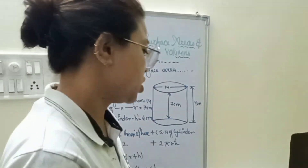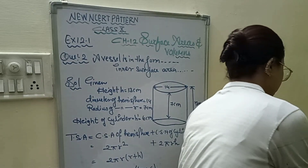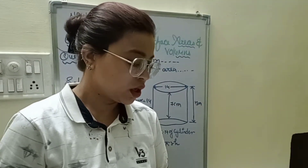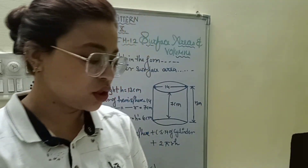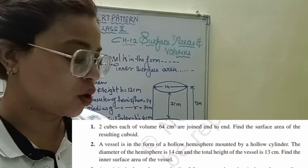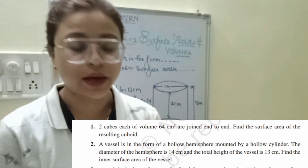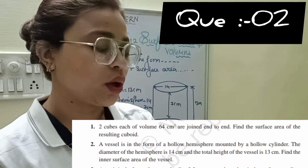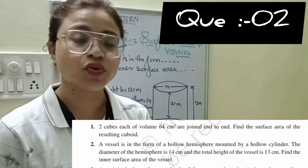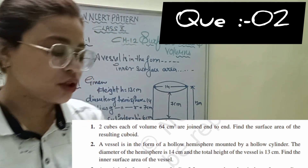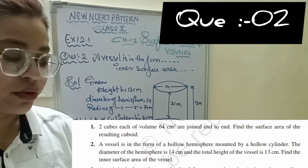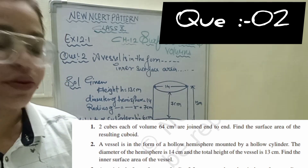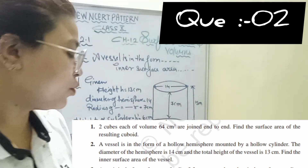Question two: a vessel is in the form of a hollow hemisphere mounted by a hollow cylinder. The diameter of the hemisphere is 14 cm and the total height of the vessel is 13 cm. Find the inner surface area of the vessel.